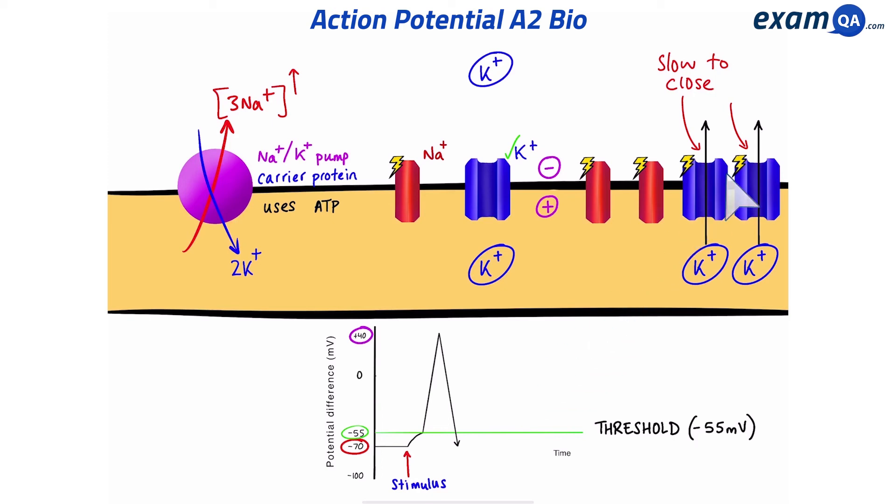However, they're quite slow to close, which means while they're closing, some extra sneaky potassium ions are going to make their way out of the neuron.